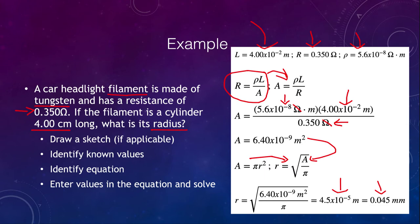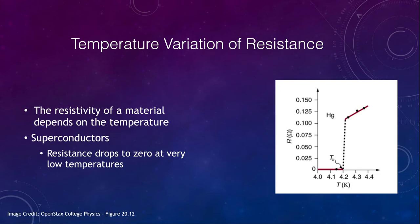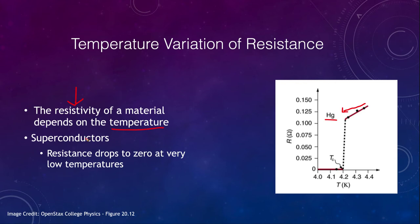We worked one example. The other thing we want to look at is how resistance varies with temperature. Something we didn't mention when talking about resistivity is that resistivity also depends on temperature. For something like mercury, if the temperature is higher then the resistance is higher, and resistance decreases as temperature decreases. There is a temperature dependence, although unless specifically asked about it in a problem, you would not need to worry about it — if you're given a resistivity, that's what you use.